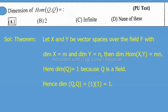Solution: Theorem - Let X and Y be vector spaces over the field F, with dimension X equal to M and dimension Y equal to N, then dimension Hom(X,Y) equals MN.